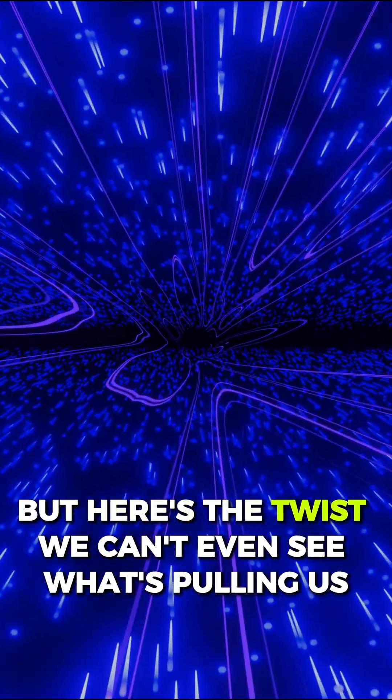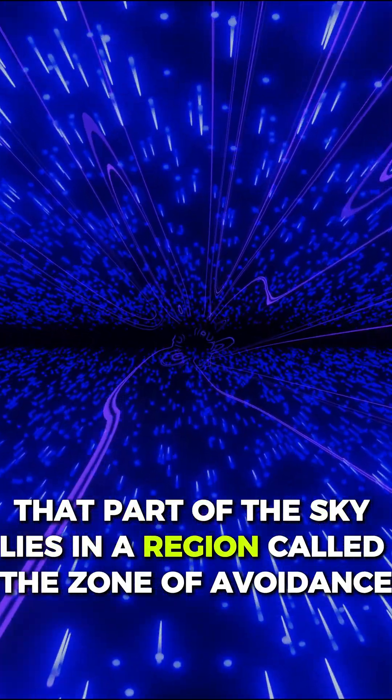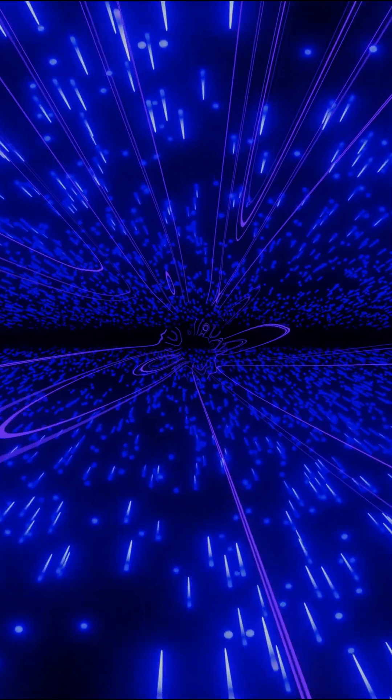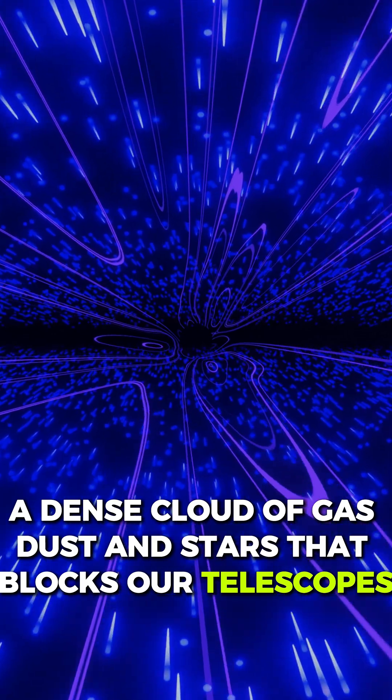But here's the twist. We can't even see what's pulling us. That part of the sky lies in a region called the zone of avoidance, a dense cloud of gas, dust, and stars that blocks our telescopes.